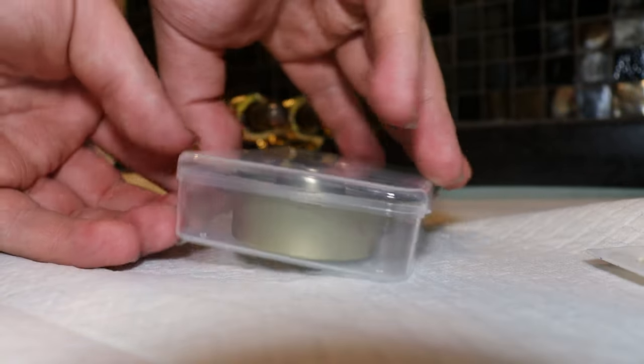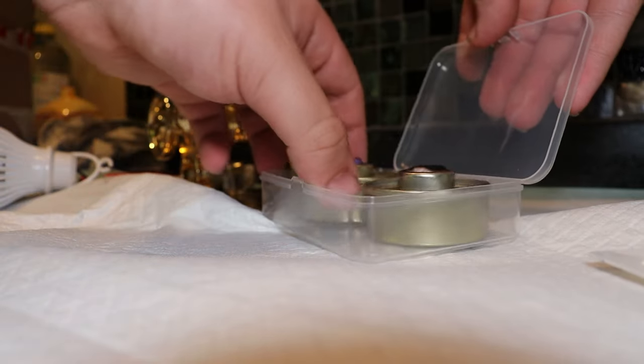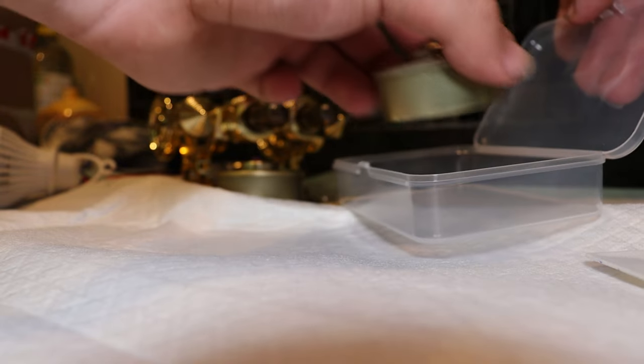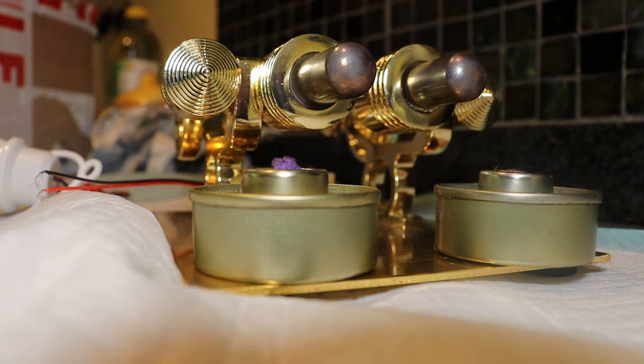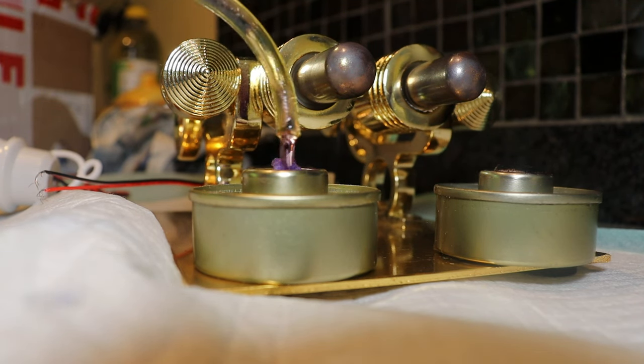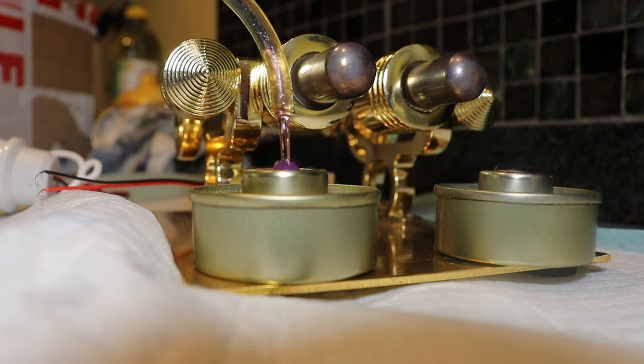So now I'm going to take the burners out of their box and we're going to fill the burners up with methylated spirits and get them lit. I'm going to use a funnel to put some methylated spirits in the burner. We don't need a lot - that should do.